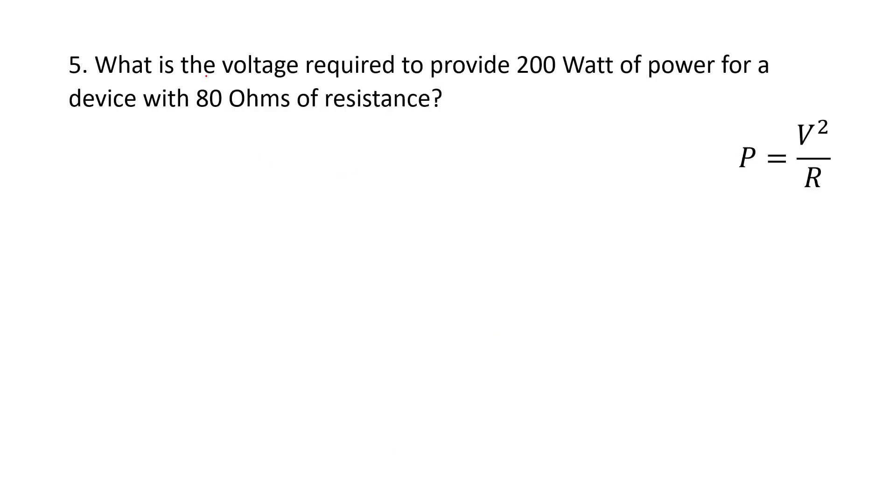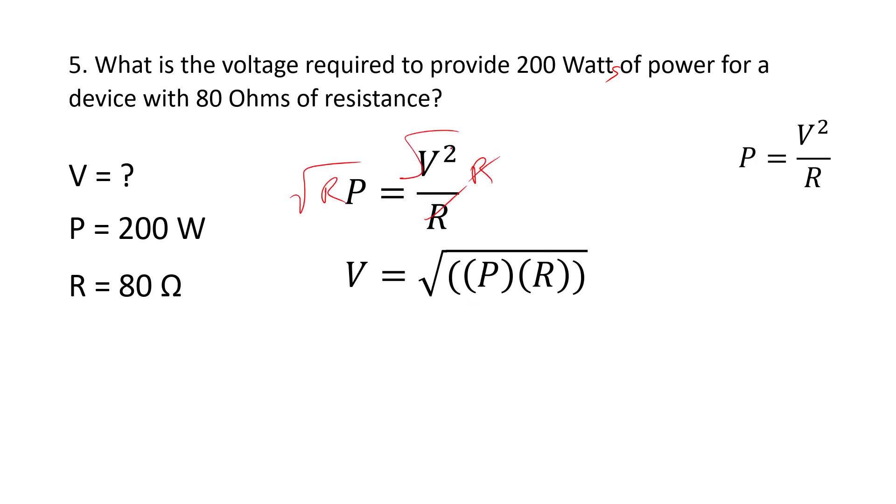Next example: What's the voltage required for 200 watts of power to a device with 80 ohms of resistance? We have this equation right here. This one has to be rearranged for V. This time we're going to multiply out the R, then we're going to take the square root to get rid of this, and get V equals square root of P times R or R times P. Either way, they're both going to be underneath the parentheses. We get an answer of 126.5 volts.